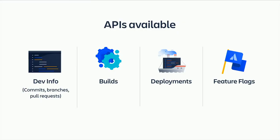So we have four APIs available. The first one we call dev info — this is the one everyone's familiar with: commits, branches, and pull requests, whether from Bitbucket, GitHub, or internal systems as well.